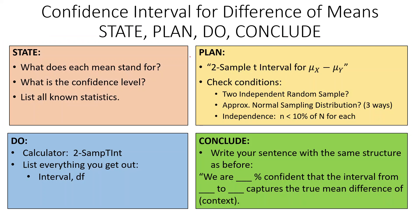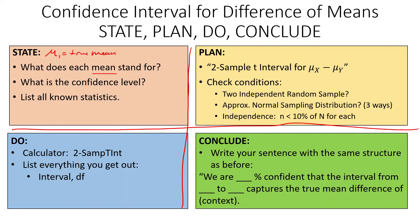The process is State, Plan, Do, Conclude — draw your cross on paper and fill in each section. In the State step, define what each mean stands for, starting with 'the true mean of whatever.' State your confidence level such as C = 95%, 90%, or 99%, and list your known statistics: x1-bar, x2-bar, the two standard deviations, and both sample sizes.